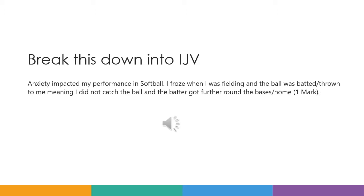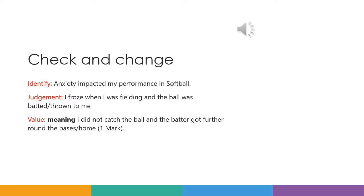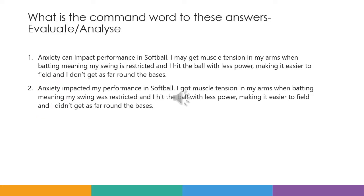Now what I want you to do is break this answer down into I, J and V. Do that in your jotter just now. And now it's time to check and change your answer — don't do it until you've actually done it on the piece of paper. Here's your identify, judgement and value. Check if you've got that correct. Now I would like you to decide which command words would have been used to make sure that these answers come out — is number one analyse or evaluate, or is number two analyse or evaluate? Write number one and two down on your piece of paper and write analyse or evaluate next to it.